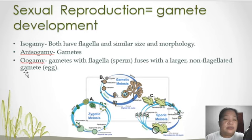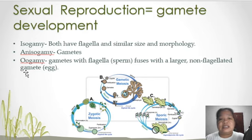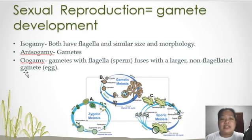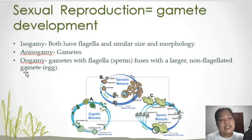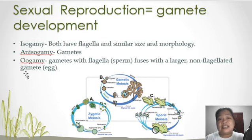When we say isogamy, both gametes have flagella and are similar in size and morphology. In anisogamy, the gametes differ — male and female. In oogamy, a flagellated sperm fuses with a larger non-flagellated gamete, which is the egg.